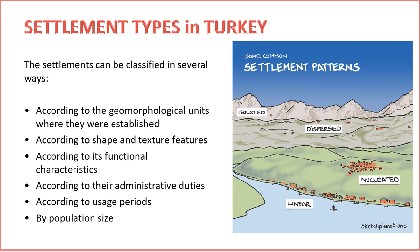3. Functional Characteristics. Settlements vary in terms of their functionality. Some are bustling urban centers, while others serve specific purposes such as agricultural or industrial functions. We categorize settlements based on these functional characteristics. 4. Administrative Duties. The administrative duties of settlements play a crucial role in their classification. Some are designated as administrative hubs overseeing a region or district, while others serve a more localized administrative purpose.